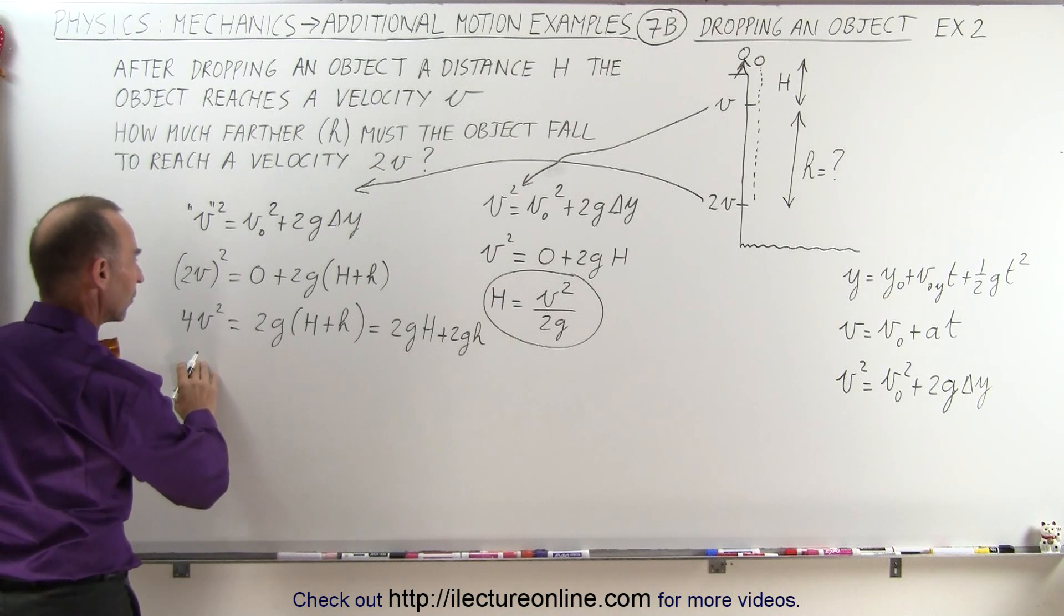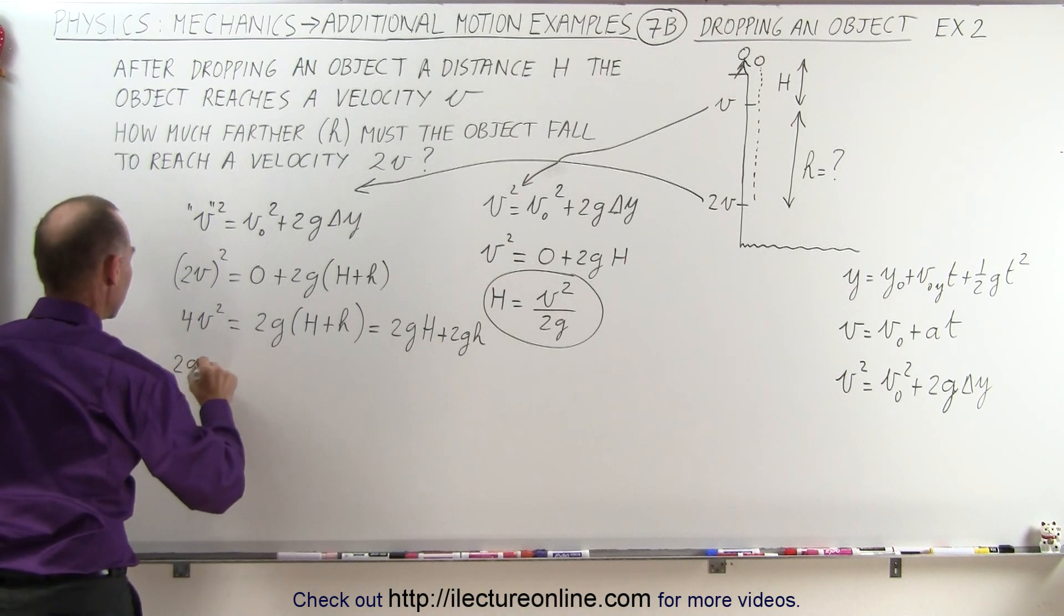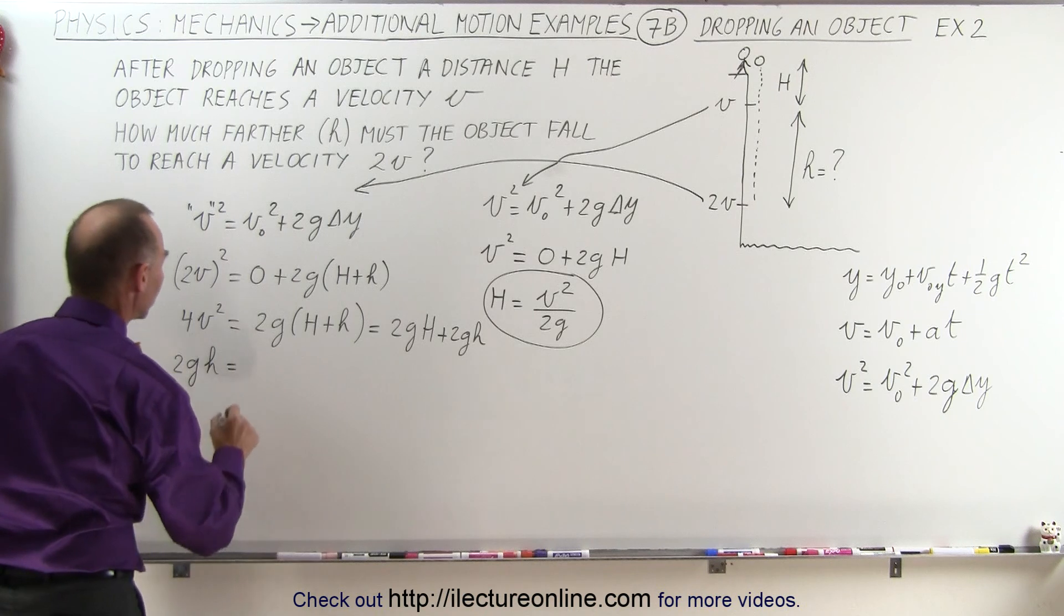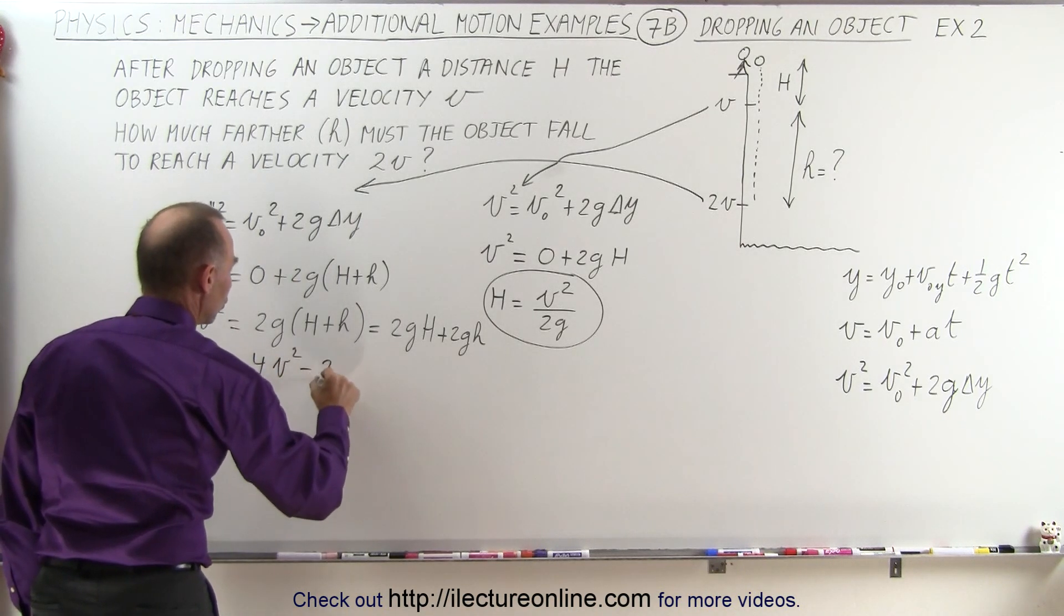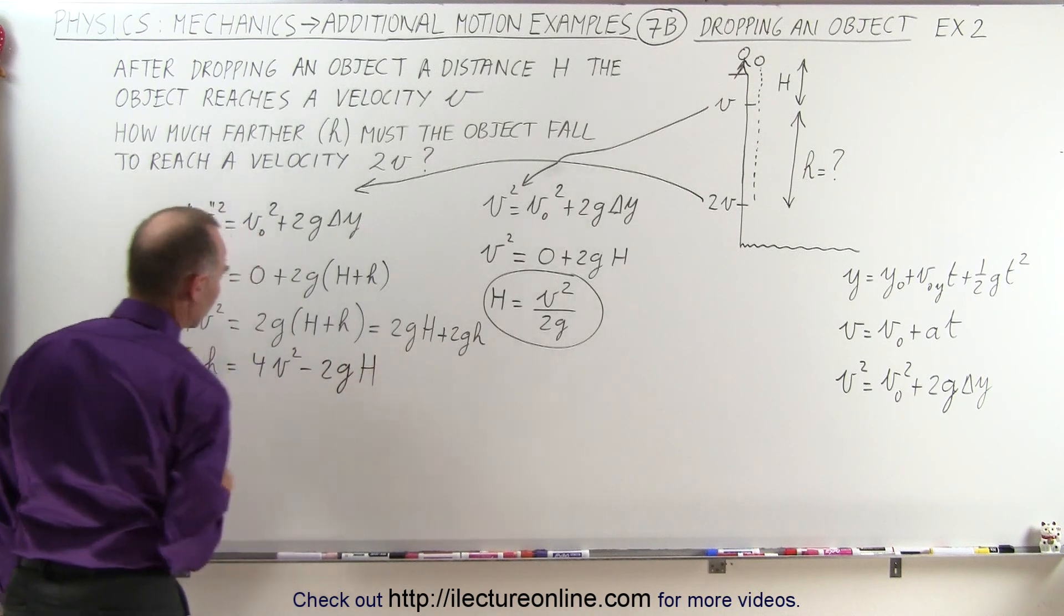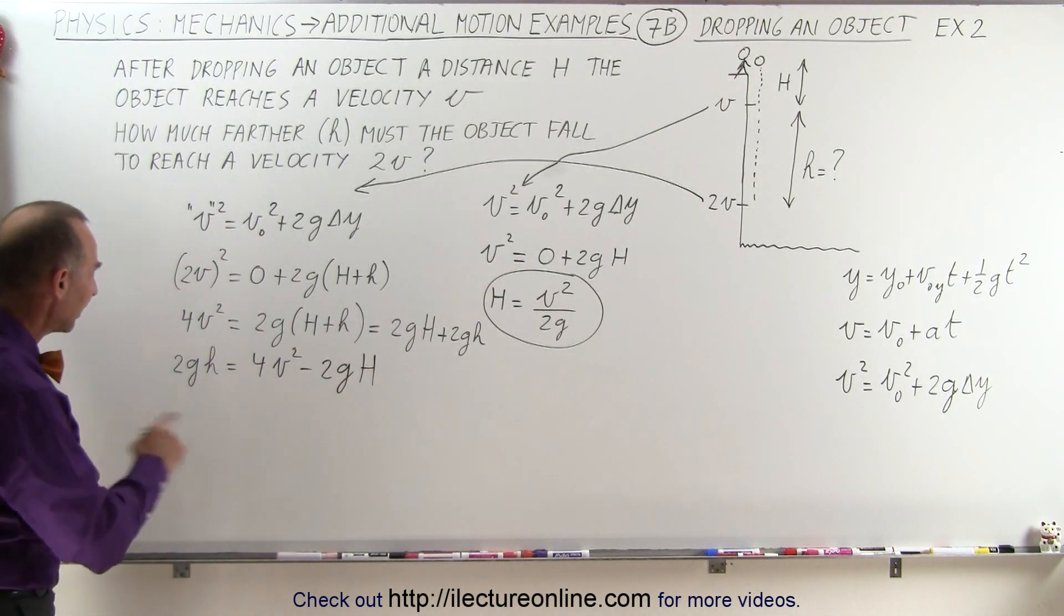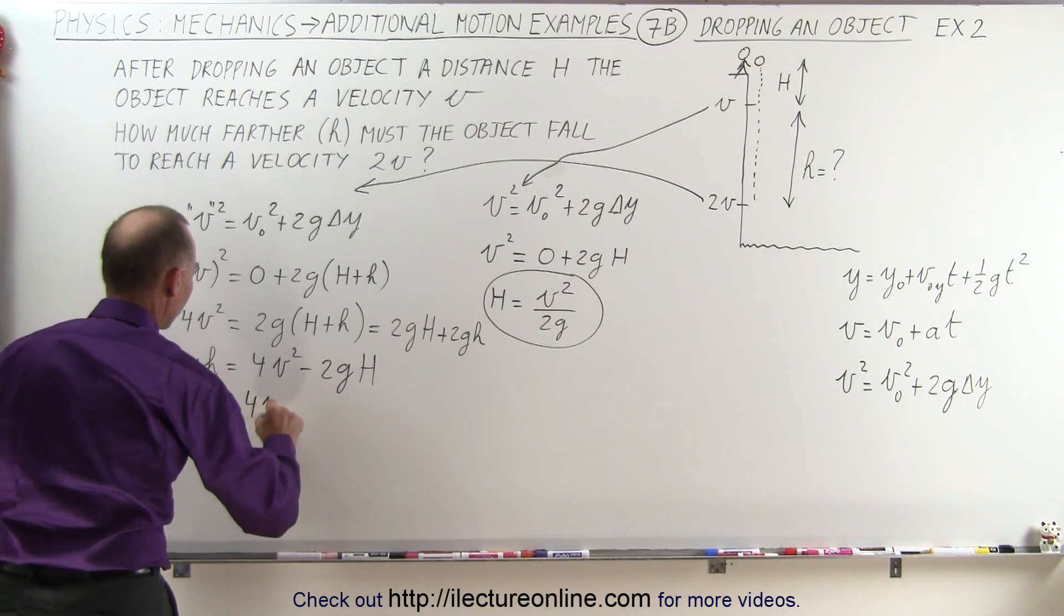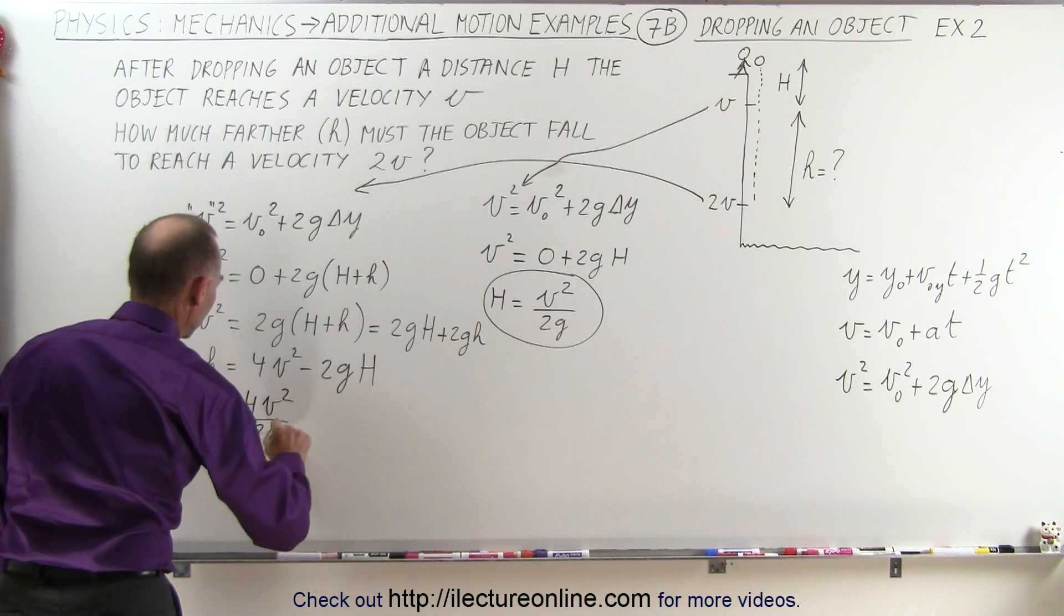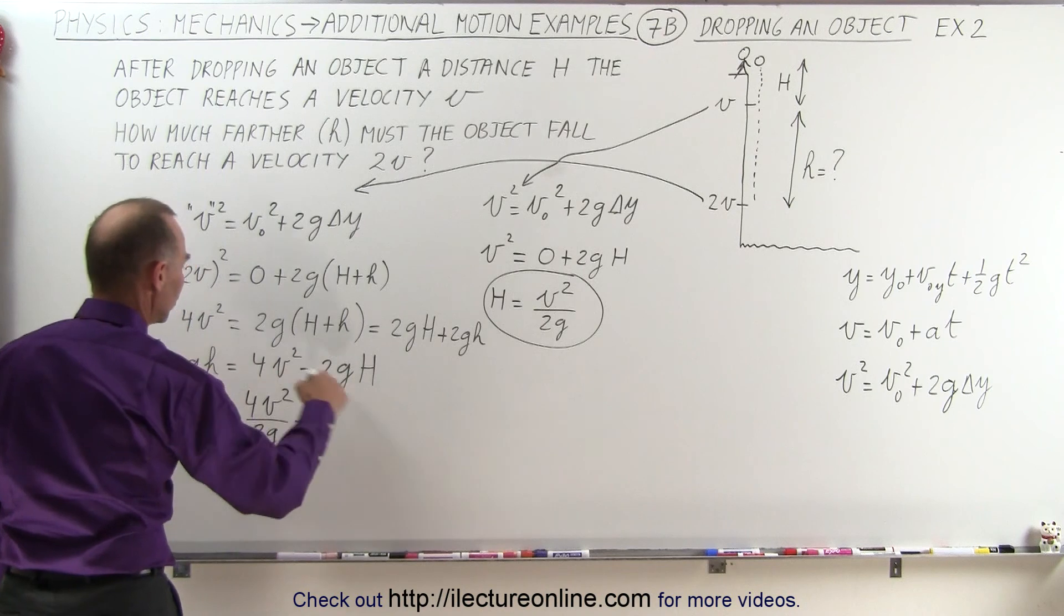So we go 2g times little h is equal to 4v² minus 2g times big H. And dividing everything by 2g, I say that little h is equal to 4v² divided by 2g minus, and the 2g and the 2g's